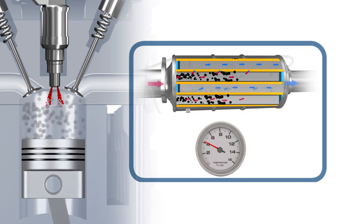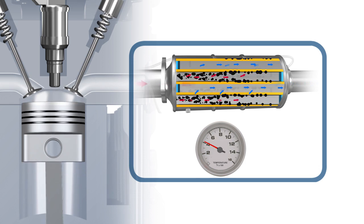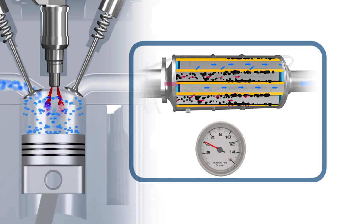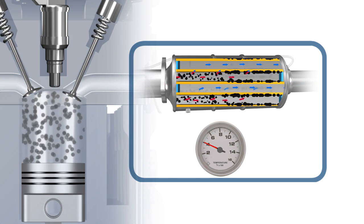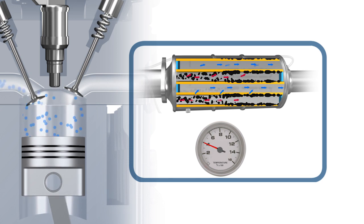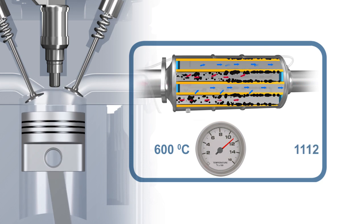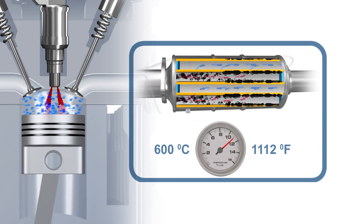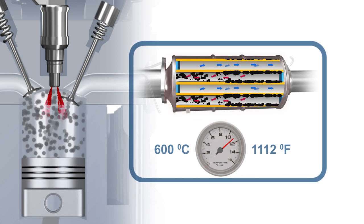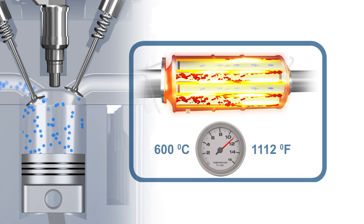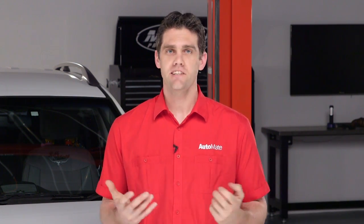Service regenerations must be instigated using a scan tool. During a service regeneration, extra fuel can be added in the form of post-injection pulses. This increases the exhaust gas temperature, creating extremely hot temperatures of around 600 degrees Celsius or 1112 degrees Fahrenheit to enable the particulates to burn off. If a flashing DPF warning is ignored, the soot accumulation may reach a level where replacing the DPF is the only possible remedy.